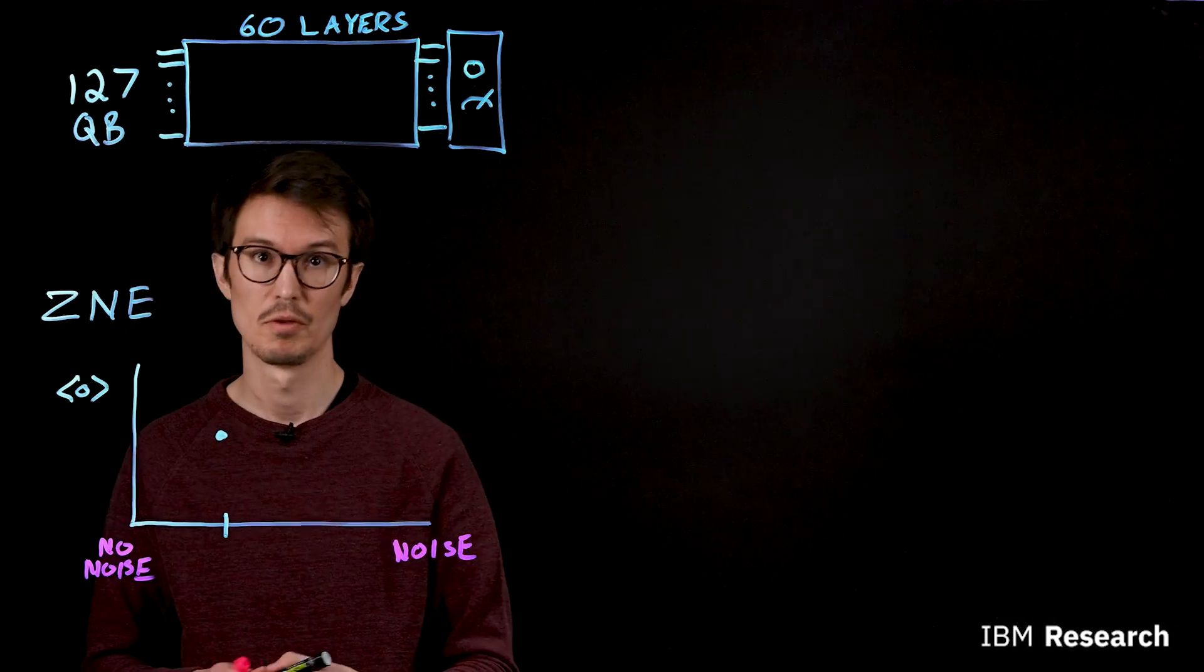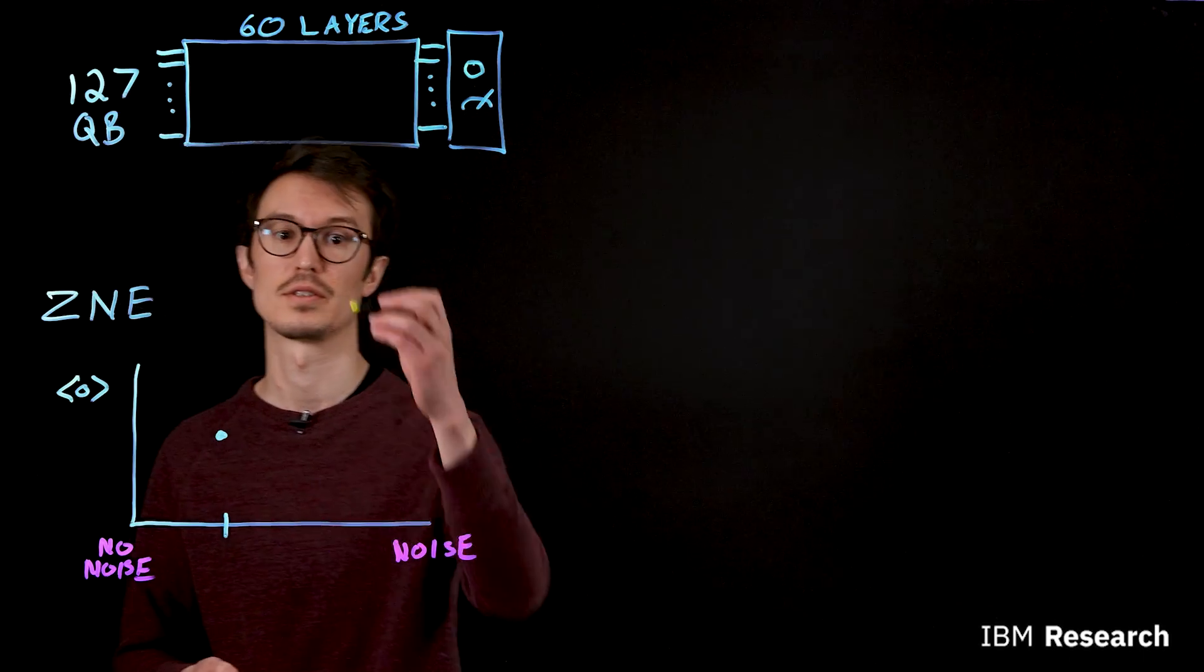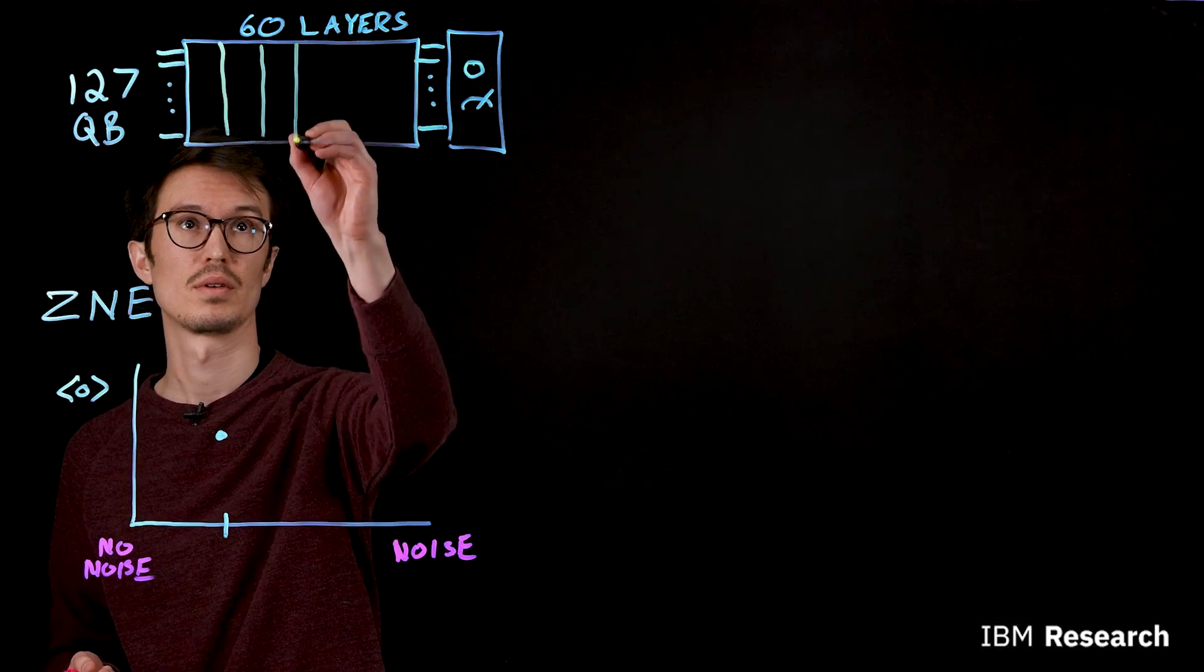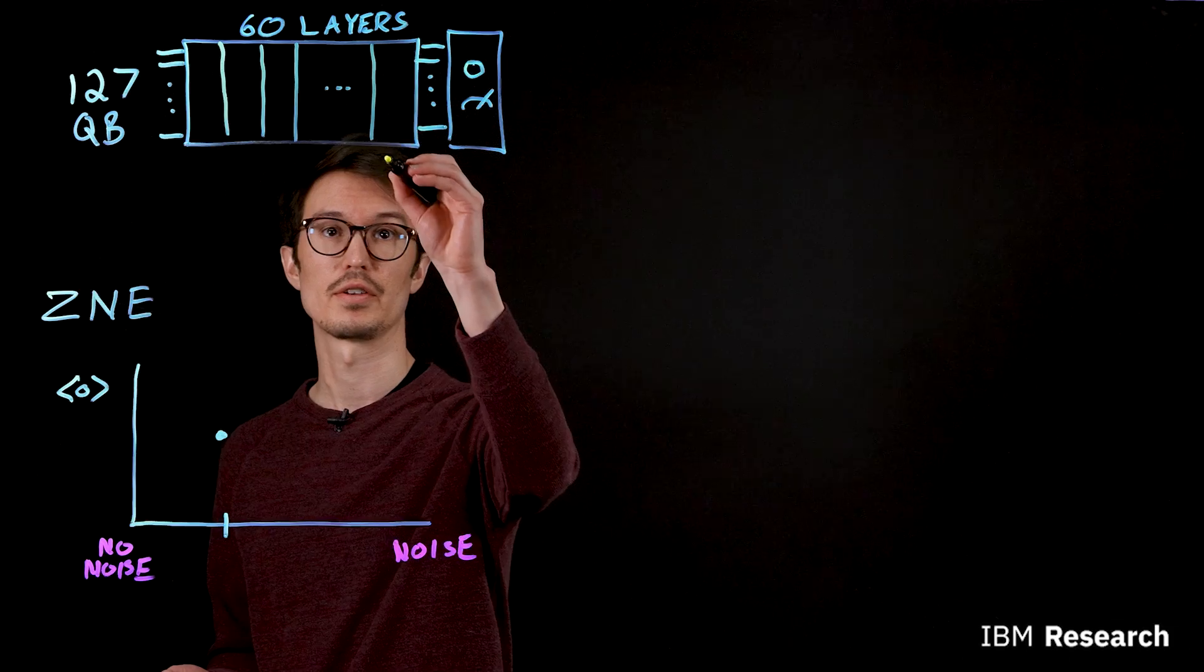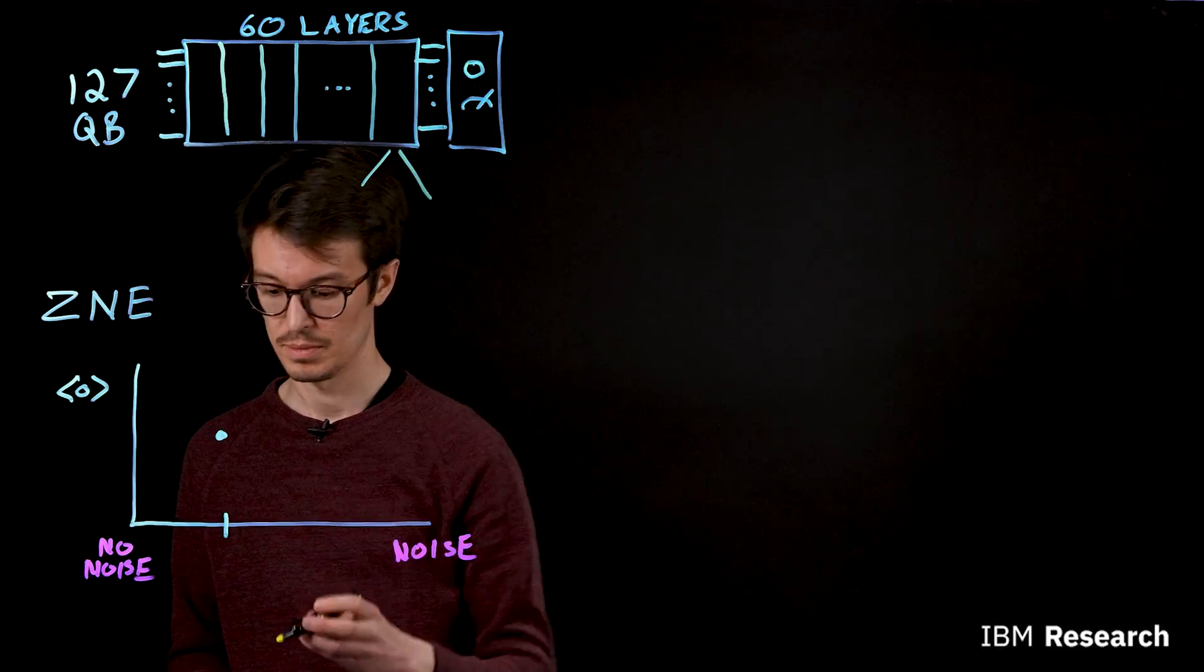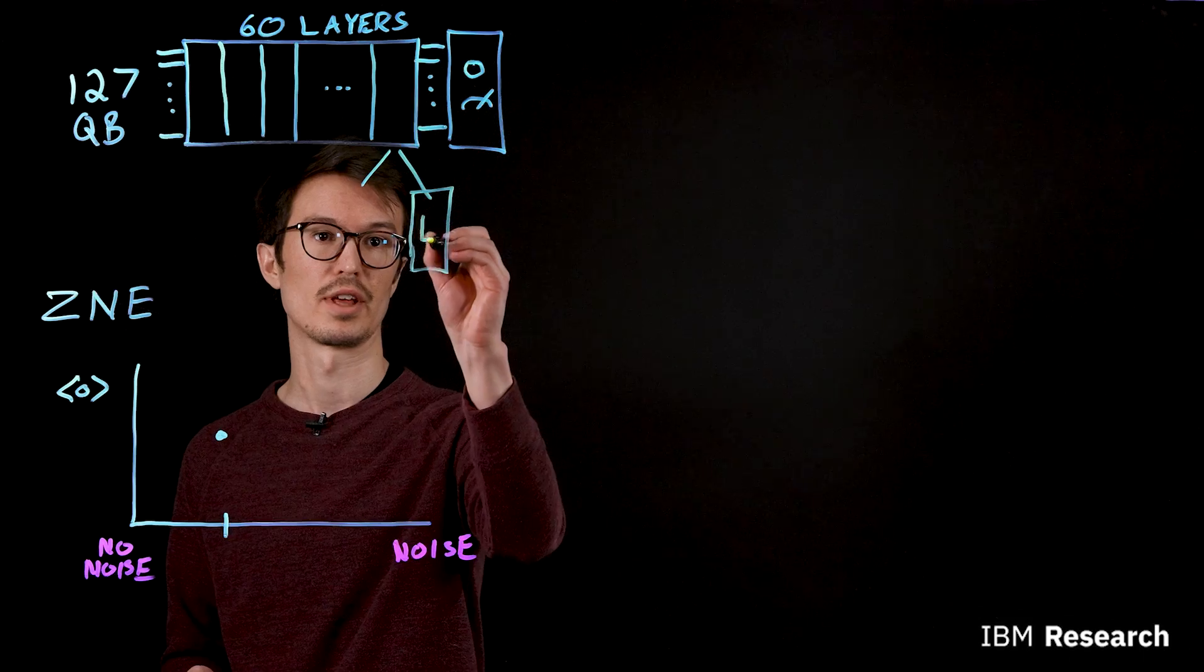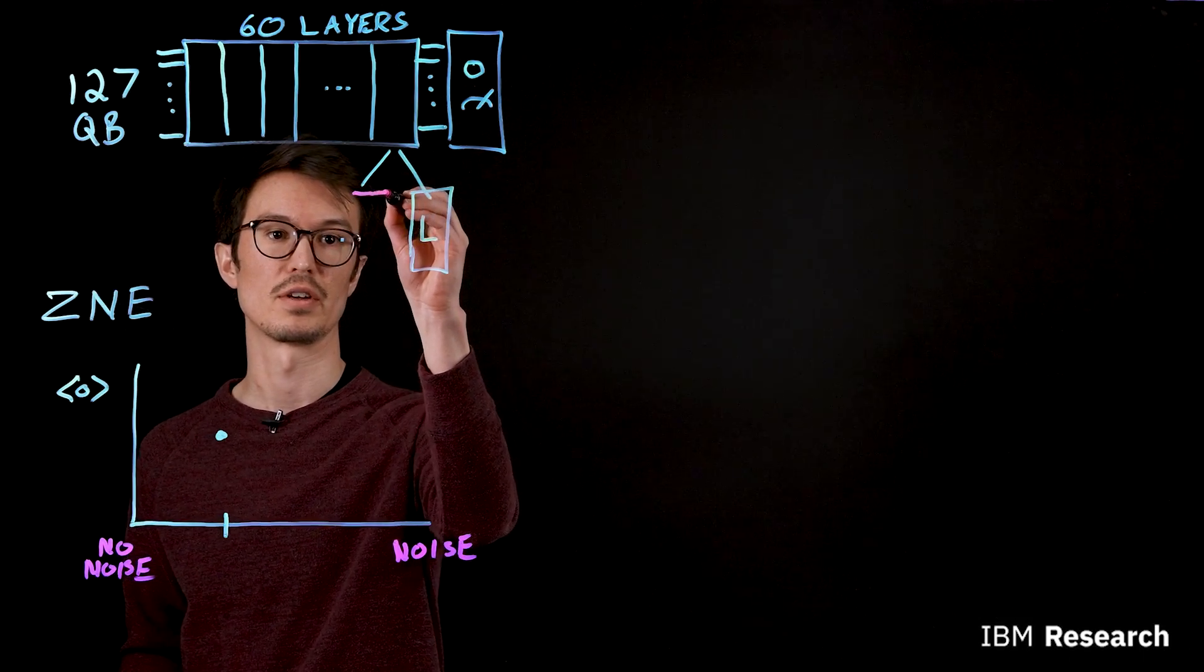Well first we'll go and learn what the noise is actually doing, how it's behaving on the device. So we'll take the problem that we're studying, we'll break it up into layers. And then for each layer we'll further decompose that into two pieces. One that captures the ideal behavior of that layer, and another representing the noise.